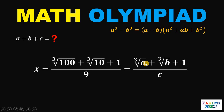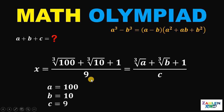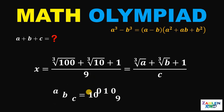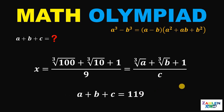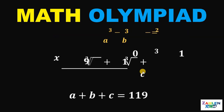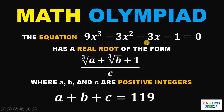This is now in the form cube root of a plus cube root of b plus 1 over c, so a equals 100, b equals 10, and c equals 9. Therefore, a plus b plus c equals 100 plus 10 plus 9, which is 119. Given the equation 9x cubed minus 3x squared minus 3x minus 1 equals 0 with a real root of the form cube root of a plus cube root of b plus 1 over c, where a, b, and c are positive integers, the value of a plus b plus c is 119.